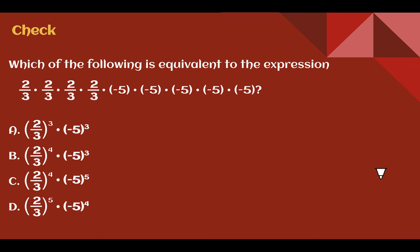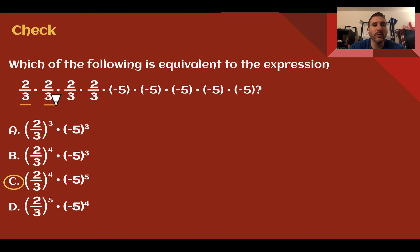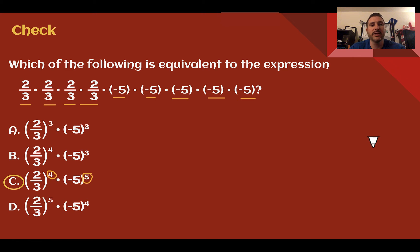Check your understanding: Which of the following is equivalent to the expression shown? Pause the video now and complete the check. The answer is C: 2 thirds to the 4th power and negative 5 to the 5th power. There are 4 of the 2 thirds, and 5 of the negative 5. So 2 thirds to the 4th and negative 5 to the 5th.